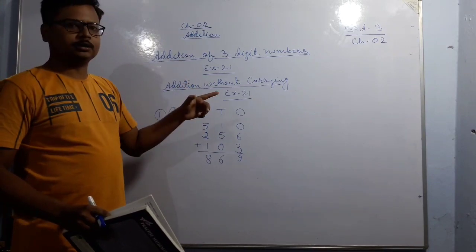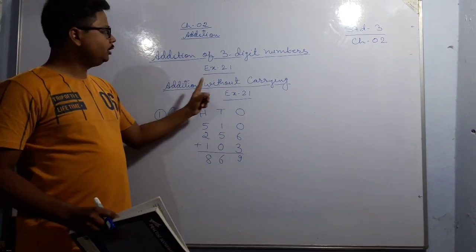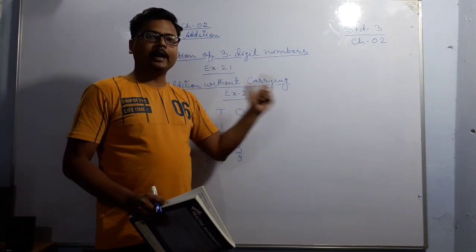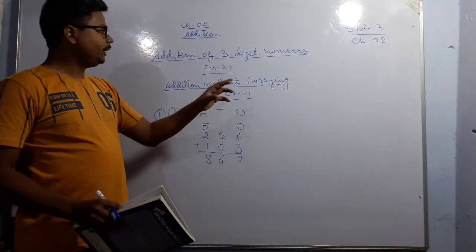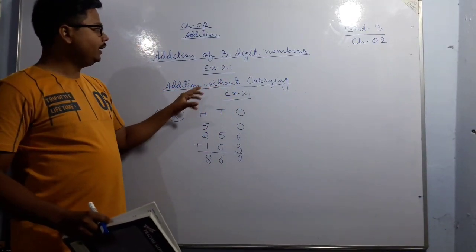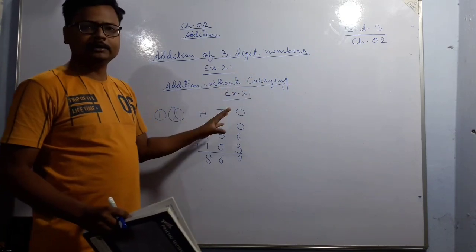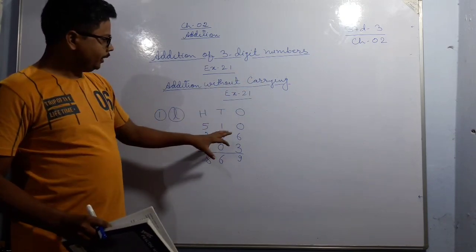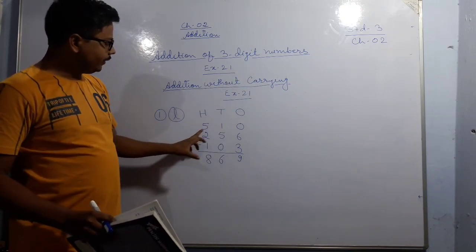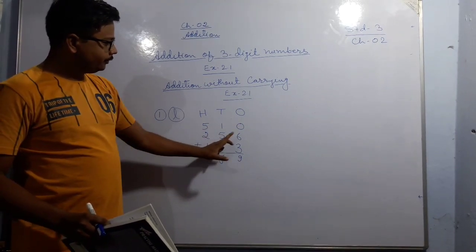In this there are two kinds of additions: one is addition without carrying and another will be addition with carrying. So let us see how to add without carrying. It is very easy. Questions are written here: 510 + 256 + 103.